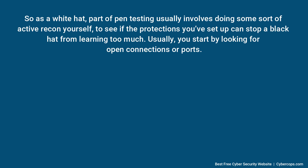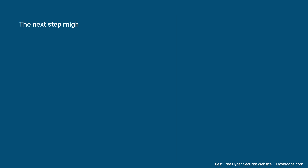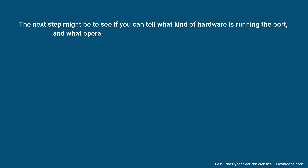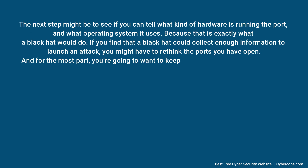Usually, you start by looking for open connections or ports. Each open port serves as a kind of link between a device and the internet where data can be exchanged. That can be dangerous because a hacker can use an open port to send code that attacks a machine. As a white hat, once you've found an open port, the next step might be to see if you can tell what kind of hardware is running the port and what operating system it uses, because that is exactly what a black hat would do. If you find that a black hat could collect enough information to launch an attack, you might have to rethink the ports you have open.